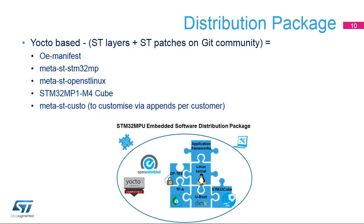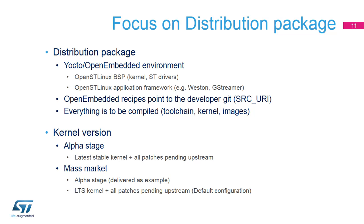The distribution package allows the creation of a new Linux distribution with a final objective of productization. It includes the source code of all pieces of software of the STM32MPU embedded software distribution, including application frameworks, plus a build framework based on OpenEmbedded, also known as Distribution Builder. A Linux host PC is strongly recommended. Main use cases include creation of your own Linux distribution, tuning system configuration options such as memory sizes or debug options, sharing all developments within your team as a software baseline, and preparing the final software for productization.